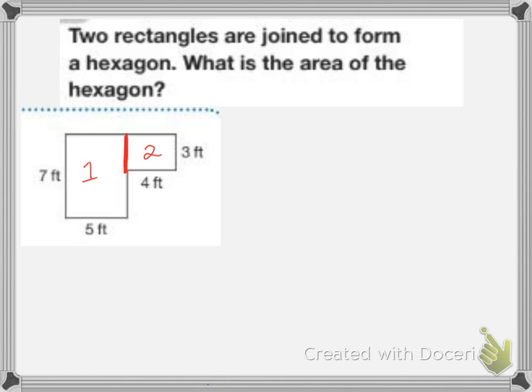So to find the area of rectangle 1, I'm going to multiply the length times the width. So we have rectangle 1, or we'd say area 1, is equal to 7 feet times 5 feet. And that is equal to 35 feet squared.